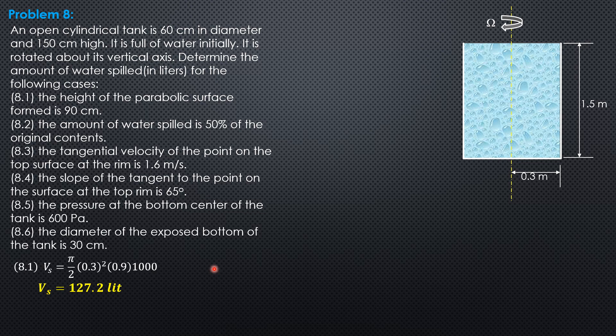So if the amount of water spilled is 50%, meaning to say 50%, the paraboloid will have a height of 1.5 meters. So volume spilled is pi over 2 times 0.3 squared times 1.5 times 1,000. So volume spilled is 212.1 liters.